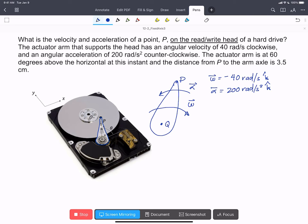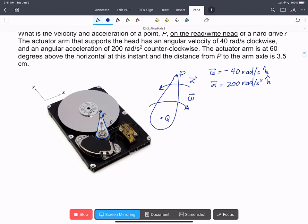We're being asked to find the velocity and acceleration of P, the read-write head. To do this, we're going to need to know R, P with respect to Q. And we can write that out.